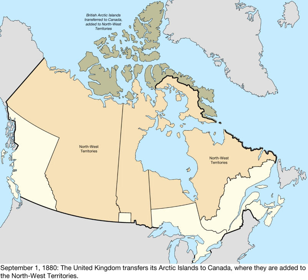These islands were never part of Rupert's Land, which covered those parts of North America draining into Hudson Bay. Canada had acquired those regions in 1870, creating the province of Manitoba and the new Northwest Territories, which originally included Northern Ontario, the rest of Manitoba, all of Saskatchewan and part of Alberta, and what is now Nunavut Territory.